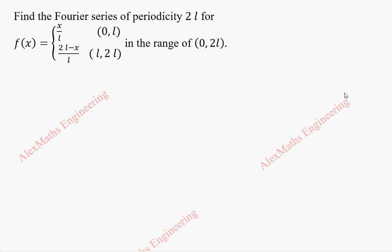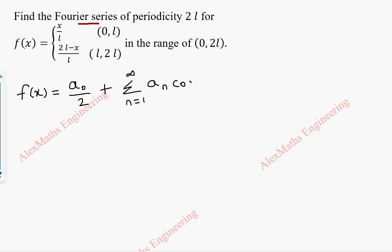Hi students, this is Alex here. In this video we are going to find the Fourier series of periodicity 2L for the given function f of x. The formula is f of x equal to a₀ by 2 plus summation n equal to 1 to infinity of aₙ cos(nπx/L) plus summation n equal to 1 to infinity of bₙ sin(nπx/L).